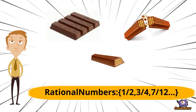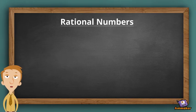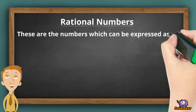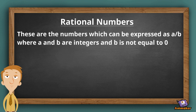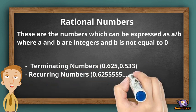These type of numbers are called as rational numbers. Rational numbers are the numbers which can be represented in the form of a by b, where a and b are integers and b is not equal to zero.